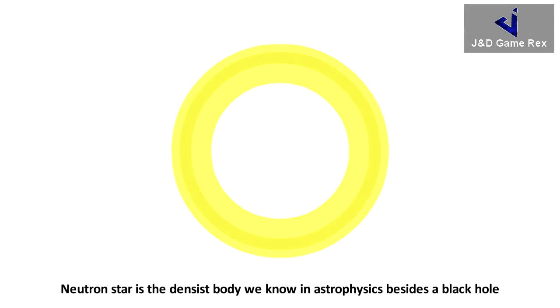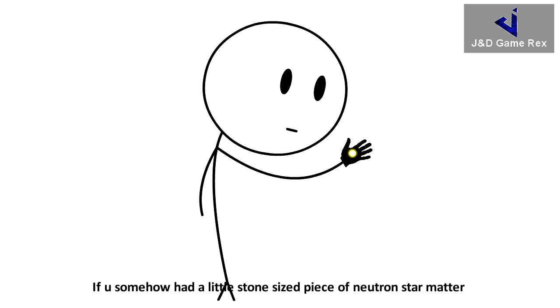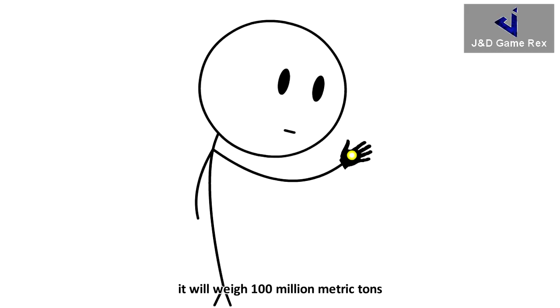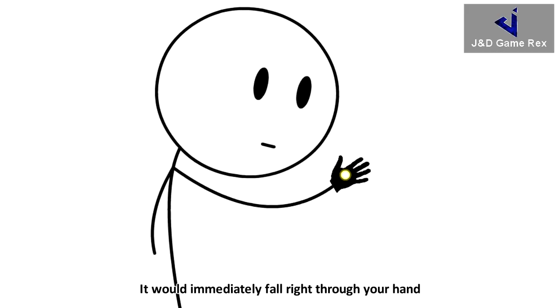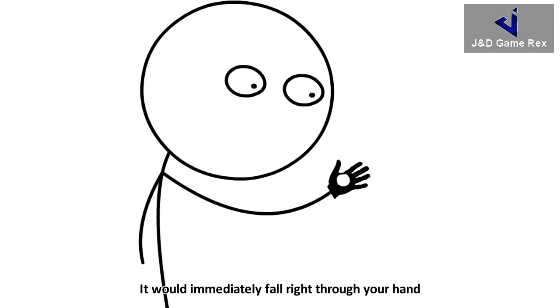A neutron star is the densest body we know in astrophysics besides a black hole. If you somehow had a little stone-sized piece of neutron star matter, it would weigh 100 million metric tons. It would immediately fall right through your hand.